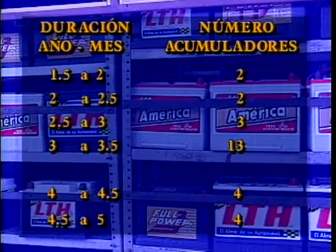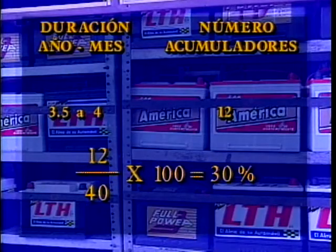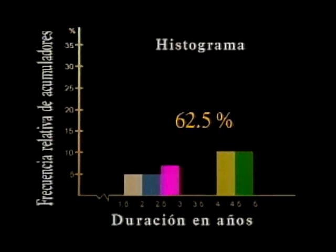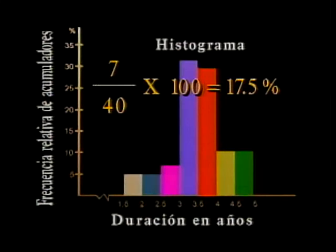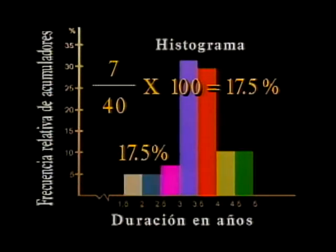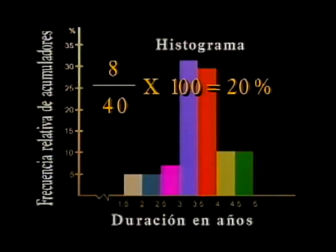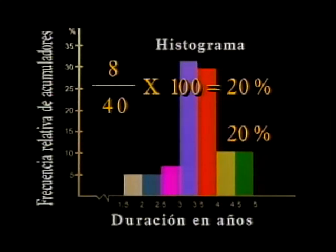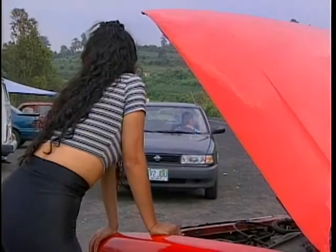Le siguen en orden descendente 12 acumuladores cuya duración fue de 3 años y medio a 4 años, que representan el 30% del total. La información sobre la vida de un acumulador puede representarse por medio de un histograma. El 62.5% del total de acumuladores tiene de 3 a 4 años de duración. La cantidad de acumuladores que duraron menos de 3 años fueron en total 7, lo que representa el 17.5%. Por último, 8 de los 40 acumuladores duraron entre 4 y 5 años, es decir, solo el 20% tuvo una duración superior a la mayoría. Así se puede concluir que el 17.5% de los acumuladores no cumplió con la garantía.